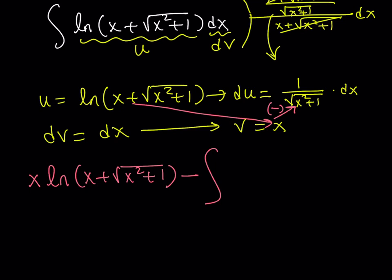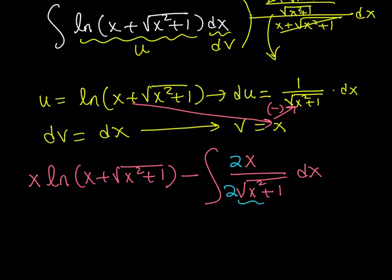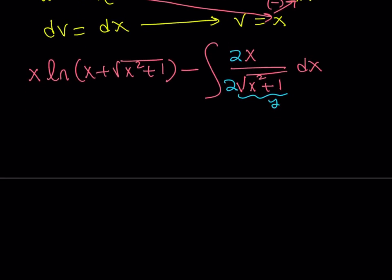This is going to be easy to integrate. Hopefully you recognize this function already, because if you go back to the ln function, you'll notice that x over the square root of x squared plus 1 is just the derivative of the square root of x squared plus 1. I do need a 2 here, so I can use a little trick and multiply the top and the bottom by 2. Let's handle this remaining integral separately and then put it together.